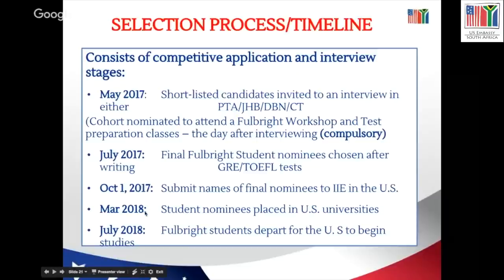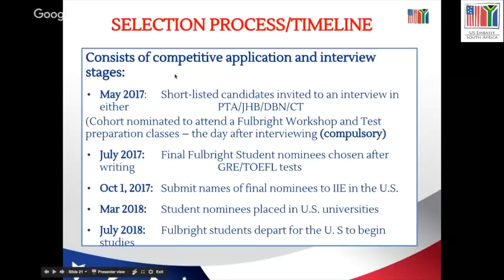Between October 1st and March 2018 is when the application and placement process continues in the US — probably the most stressful period for many students as they wait to hear about placements. At the end of March, students are notified of their position. The Fulbright office will then organize a pre-departure program, book your ticket, help you get your visa, and tell you how to navigate the US. The timeline from when you apply until you depart is approximately 14 months. Students should remain engaged in studies or work during that period and not just wait — a backup plan is always a good idea.